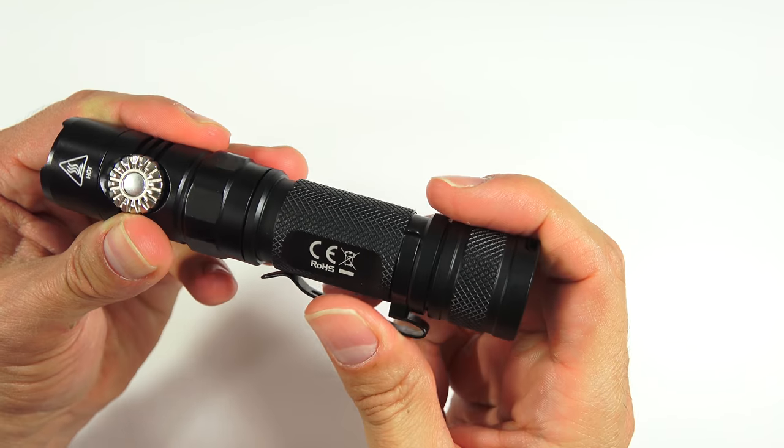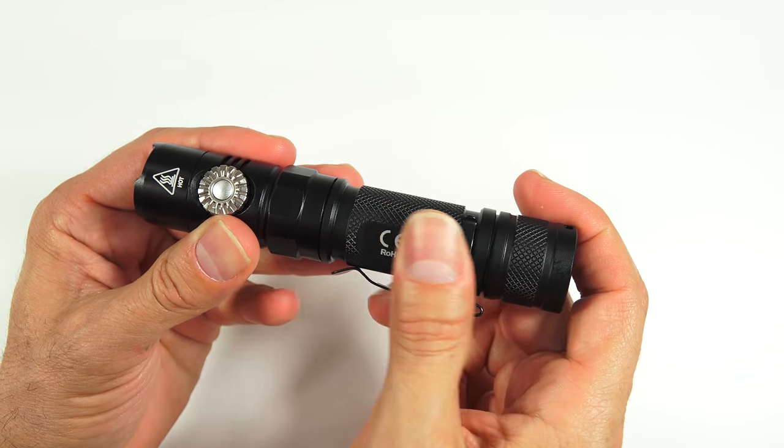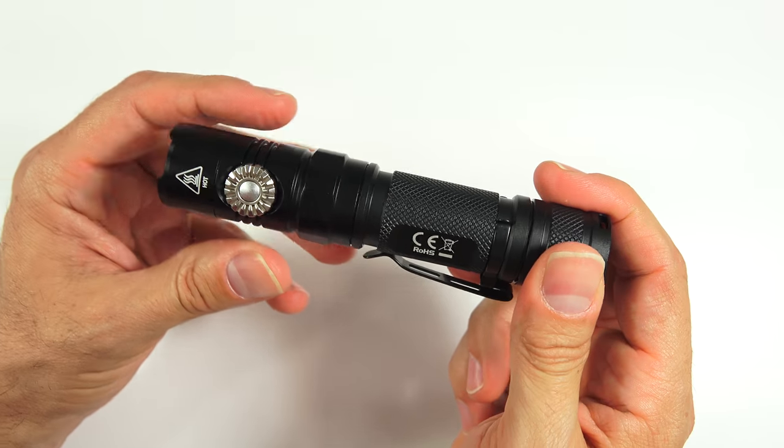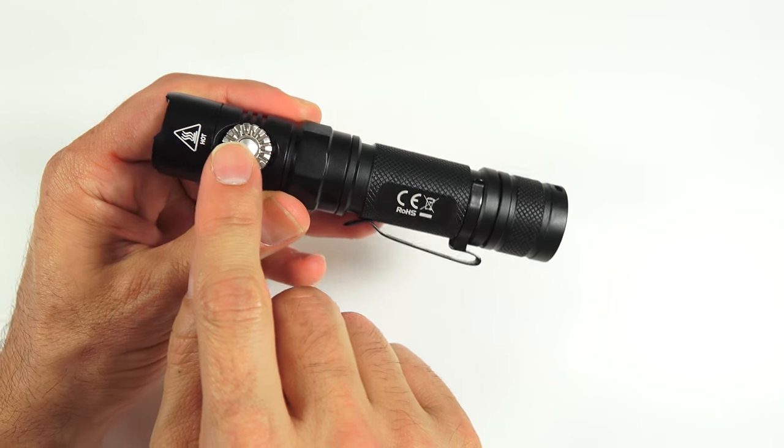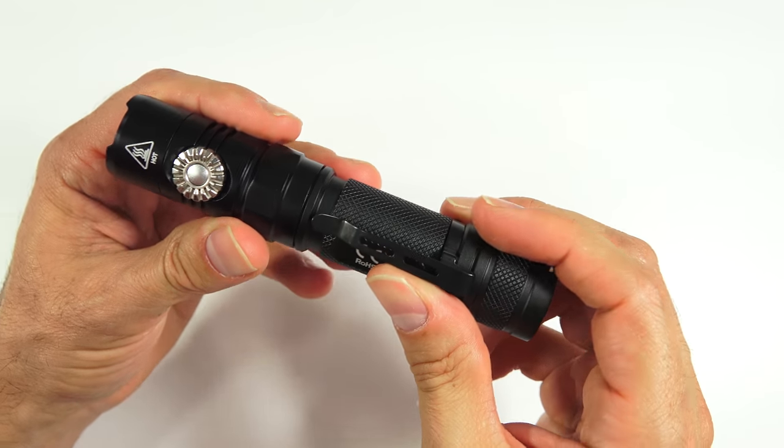You can move the pocket clip around. If I had to nitpick something here, there are these two indentations in the side of the body here, one on each side. And just from an OCD perspective, it would be nice if they lined up with the rotary dial. Not really that big of a deal for me, but would be kind of a nice thing.